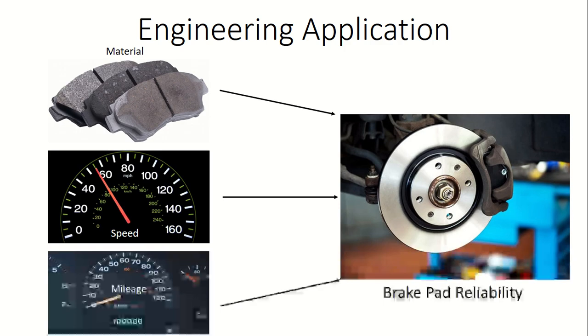Let's look at an engineering application. Say we have an experiment to measure how certain factors of a vehicle affect the reliability of its brake pads actually working. In this experiment, our independent variables are brake pad material, the average speed of the car, and the mileage on the car.